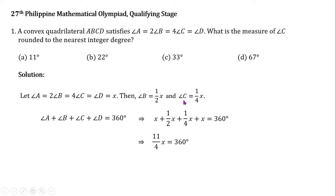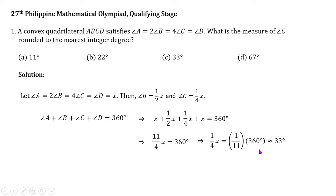Take note that angle C is equal to one fourth x, so we don't have to solve for x. We just have to multiply both sides by 1 over 11. So we must get one fourth x equals 1 over 11 times 360 degrees. Dividing 360 by 11 and rounding to the nearest integer, the result is 33 degrees. So angle C measures 33 degrees, and the answer is letter C.